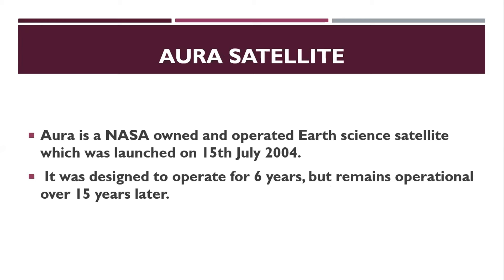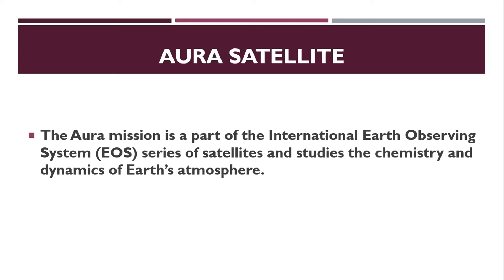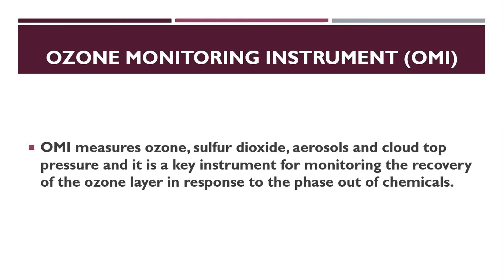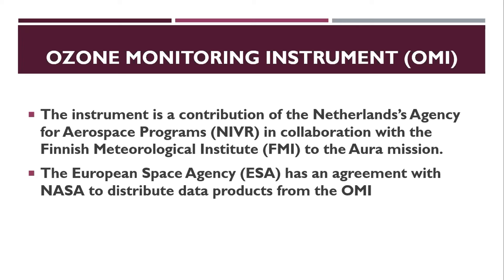The UV Index was developed using data from the Aura Satellite, created by NASA on 15th July 2004. It was designed for six years but operated for 15 years. The Ozone Monitoring Instrument (OMI) aboard Aura monitors ozone, sulphur dioxide, aerosol, and cloud pressure. This instrument is a product of the Netherlands Agency for Aerospace Programme, the Finnish Meteorological Institute, and the European Space Agency.